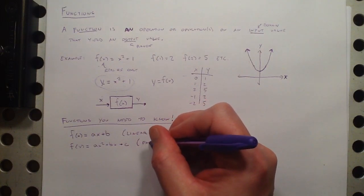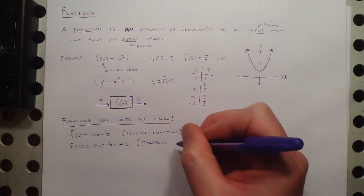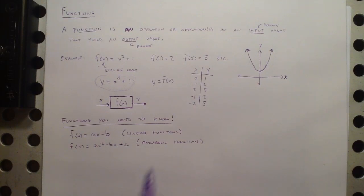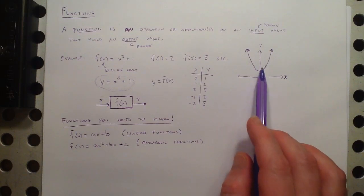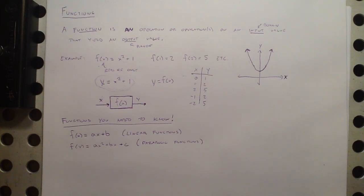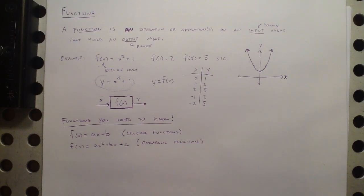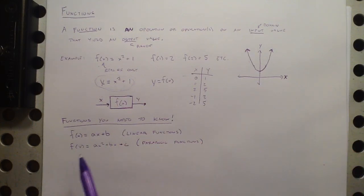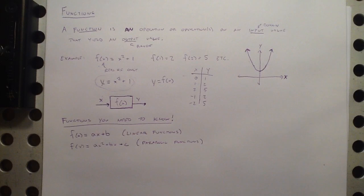We need to know parabolic functions — those are quadratic functions. We call them parabolic because if we graph them, the shape makes a parabola. There are other ways of representing this: you can put it in vertex form, or you can take a, b, and c, put them into the quadratic formula and find the zeros — the places where they cross the x-axis. Those are the x values that make the function equal to zero.